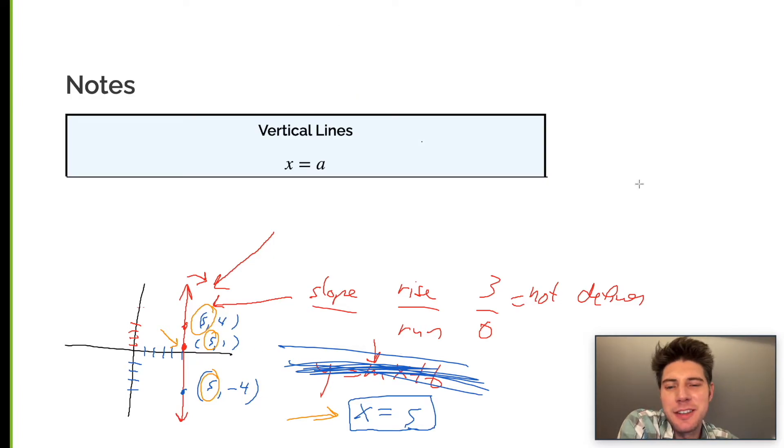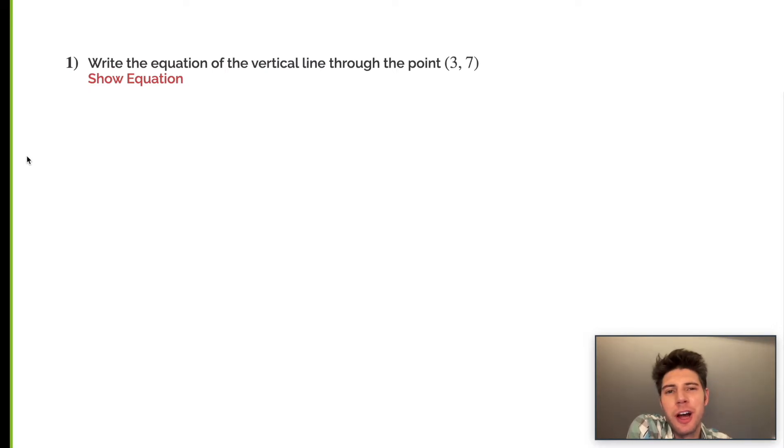So now let's solve a couple problems. Write the equation of the vertical line through the point (3,7). There's a couple ways we can do this. One quick shortcut would be to recognize this is the x and this is the y, so we can just say x equals three. And we can check this answer, and we get x equals three.